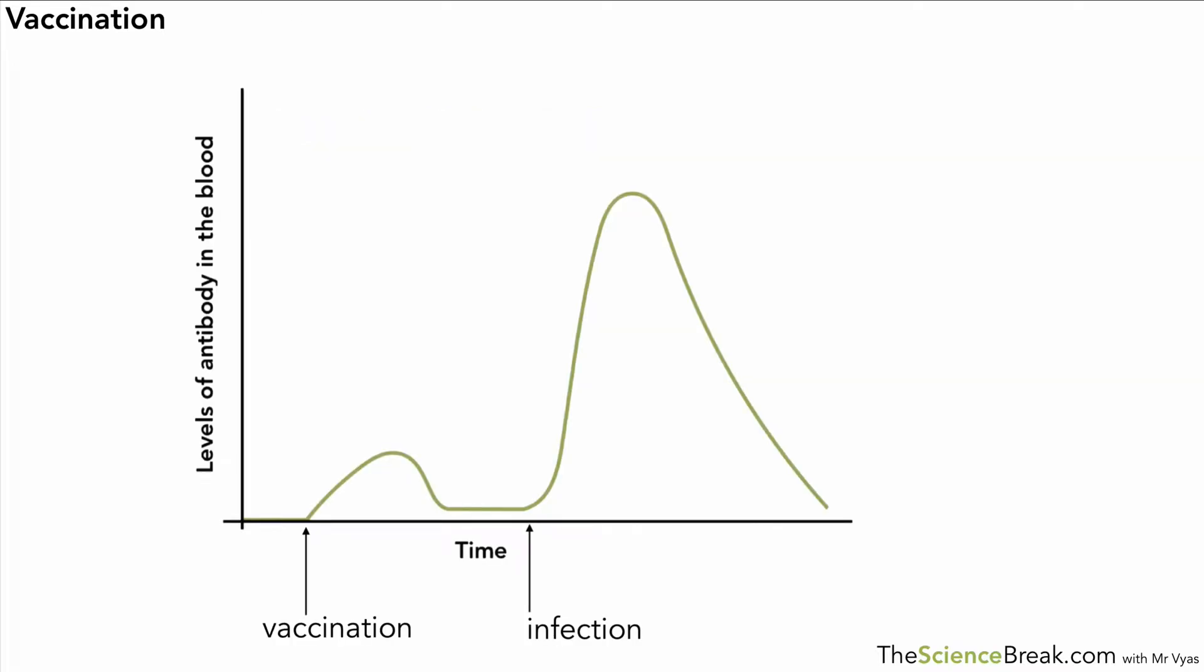Now you may have seen a graph that looks a little something like this and it's worth having a look at what this all means. We've got an increase in the levels of antibody after the vaccination. Quite a slow increase but certainly an increase. We've got a region there...